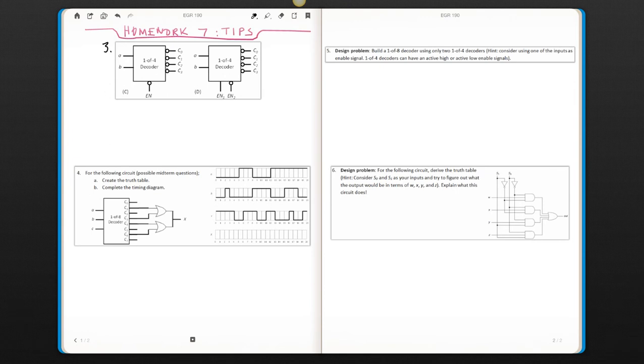So for question 3, it's asking for truth tables for different decoder circuits. When you have an enable input, I'm talking about 3C right now, if you have an enable and A and B as your inputs, and then C0, 1, 2, 3, you don't necessarily have to create 8 lines here.